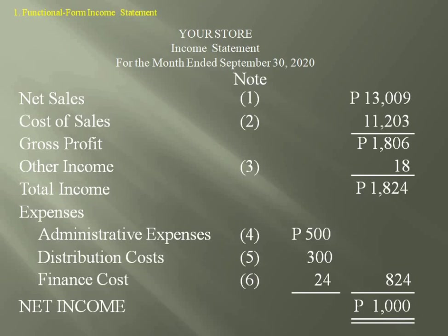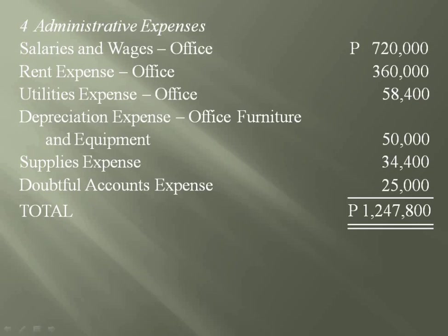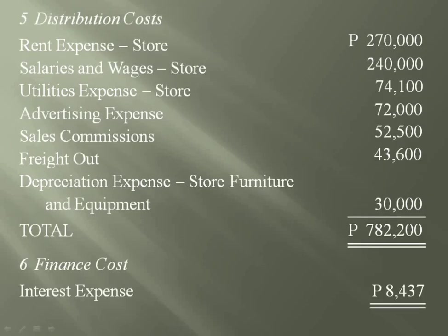Not that difficult, right? Let's continue with the other notes of the sample merchandising. Note 3 shows the computation of other income. Note 4 is for administrative expenses, sometimes called general and administrative expenses. Note 5 is for distribution cost. Note 6 is for finance cost, which is the interest and other charges incurred in connection with borrowing funds.